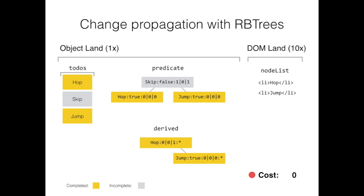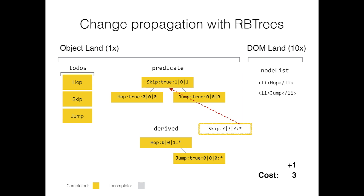Alright, so let's update skip to complete and see what happens. When skip is marked as complete, the predicate node observes that change and updates its value. Now that the predicate value is true, its sister node needs to be inserted into the derived tree. To insert in the derived list, we need to compare the indexes of skip and hop in the to-dos list. To find skip's index, we use skip in the predicate tree to calculate it. We do the same thing with hop — looking up hop's sister node in the predicate tree and calculating hop's index. Once we have both indices, we know that skip should be inserted to the right of hop and move to the next node in the derived tree.